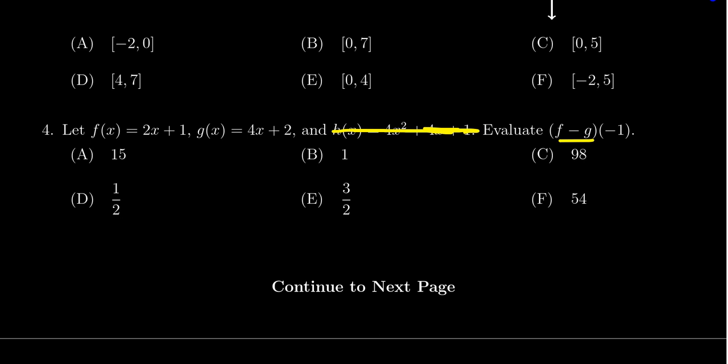What does f minus g mean? It means we subtract the functions, for which there are two options. We could subtract the algebraic formulas f and g and then evaluate at negative one, but f minus g at negative one is the same thing as f of negative one minus g of negative one.